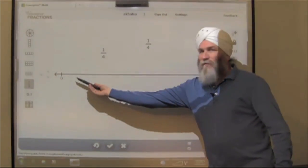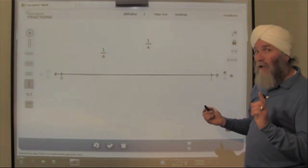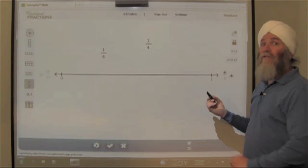I'm simply going to show the distance between 0 and 1 with no partitions, and I'm going to rely upon decimal equivalents to tell me more about where 1/4 fits on the number line.